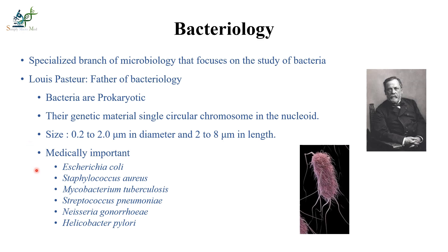The size of medically important bacteria is 0.2–2 micrometers in diameter and 2–8 micrometers in length. Examples of medically important bacteria are Escherichia coli (E. coli), which causes urinary tract infections; Staphylococcus, which causes pyogenic, respiratory tract, and urinary tract infections; Mycobacterium tuberculosis, the causative agent of tuberculosis; Streptococcus pneumoniae, which causes pneumonia; Neisseria gonorrhoeae; and Helicobacter pylori, which causes gastric infection.